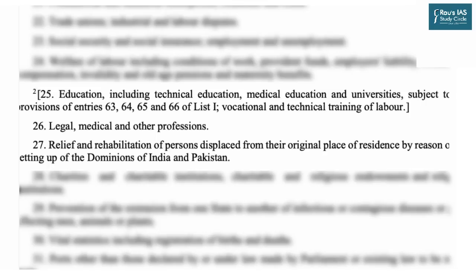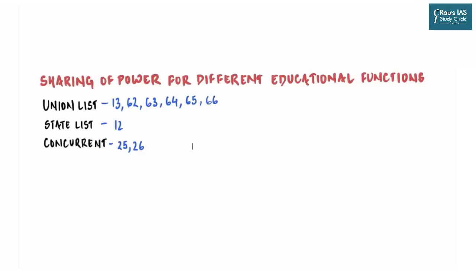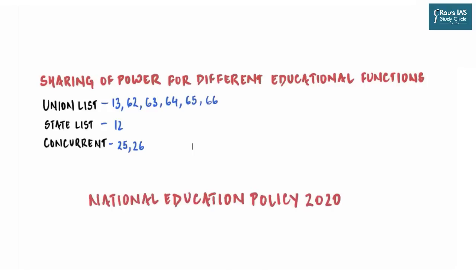List 1 — the Union List — demarcates the exclusive responsibility of the central government. List 2 — the State List — specifies functions performed by state governments. List 3 — the Concurrent List — specifies joint responsibilities of center and state. Overall, the central government formulates general policies, gives directions and financial aid, while responsibility for implementing these policies is shared. It is as a furtherance of this policy-making responsibility that the government has come up with the National Education Policy 2020.